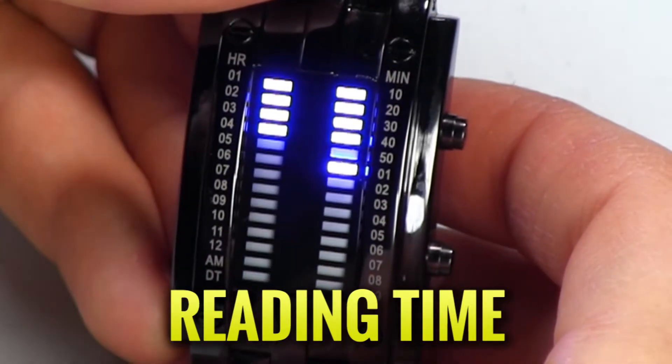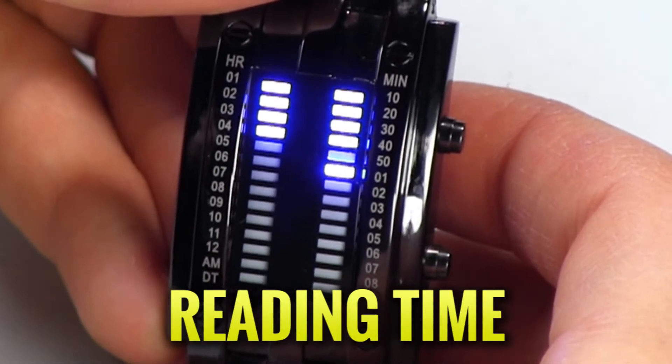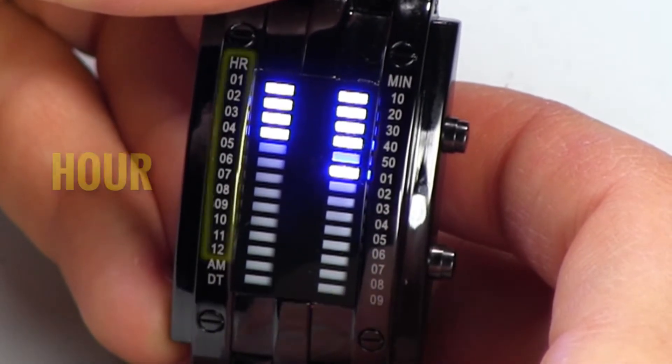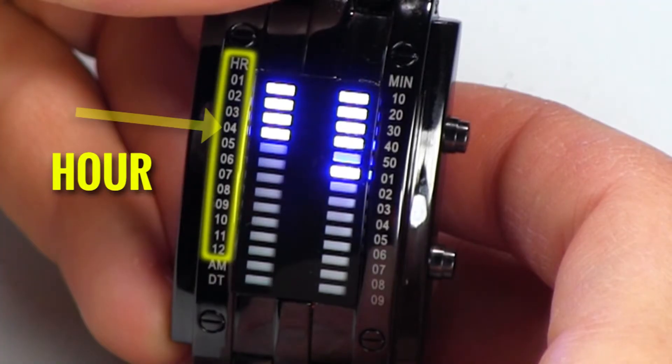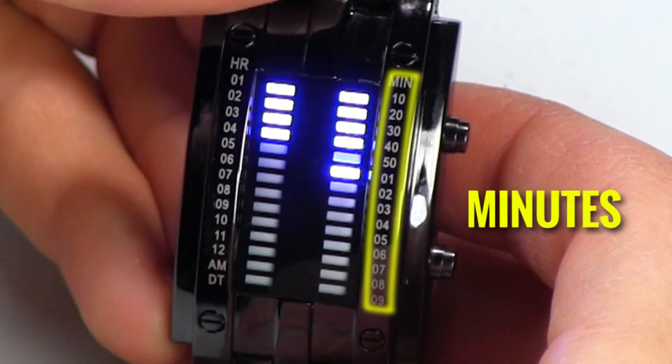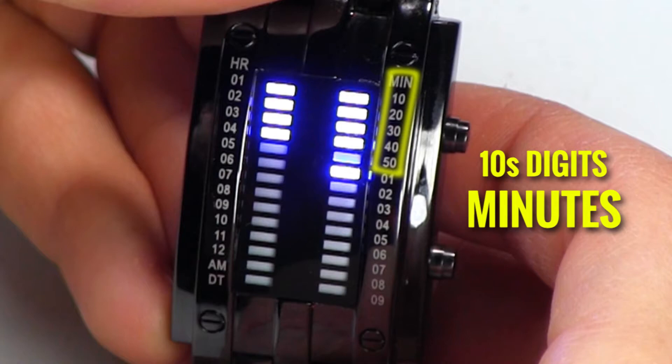Hit the top button once to read the time and you'll see on the left is the hours, and you'll see right there the light goes up to four. On the right is the minutes and you'll see the first five numbers there are 10 through 50. Those are the tens digits.